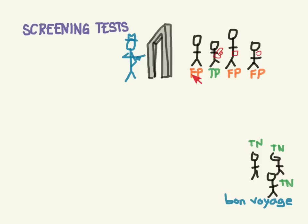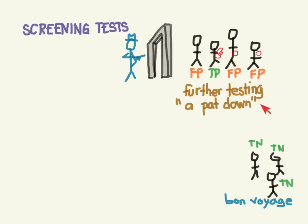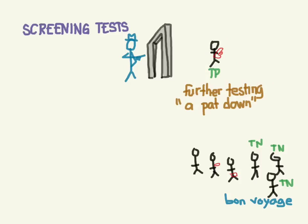The positive group needs further testing, so they all get a pat-down. A pat-down is a fairly invasive test — they're getting into your personal space. We don't want to do this pat-down on everybody because it's time-intensive and it's really not fair. But this group has a higher likelihood of having something bad, so we do the more invasive test on them. We find that most can go on their way, and of course the guy with the gun is going to jail.